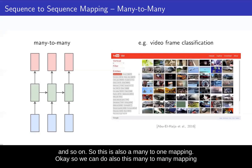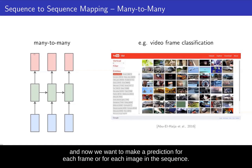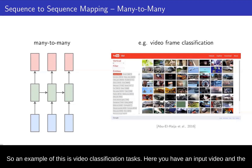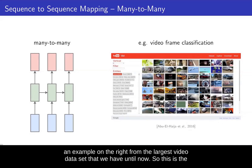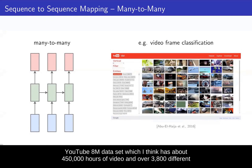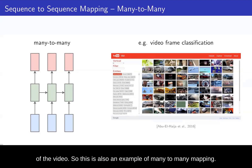We can also do a many-to-many mapping, where our input is of variable length — let's say a video, which is a sequence of frames — and now we want to make a prediction for each frame in the sequence. An example of this is video classification. Here you see an example from the YouTube 8M dataset, which has about 450,000 hours of video and over 3,800 different classes. The network has to predict which class it sees in each frame of the video. So this is an example of many-to-many mapping.